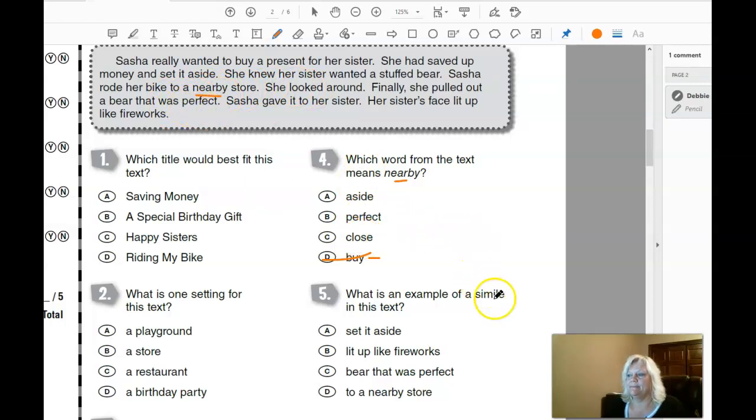What is an example of a simile? A simile is going to use the word like or as, and it is right down here. She said it lit up like a firework. Well, what lit up like a firework? It was her sister's face.